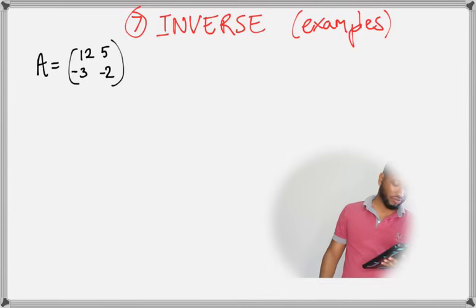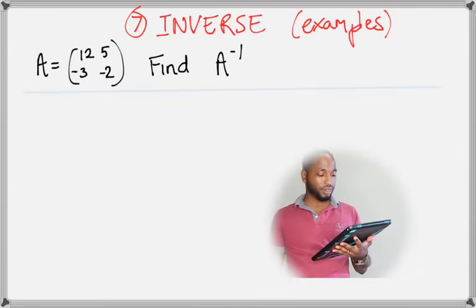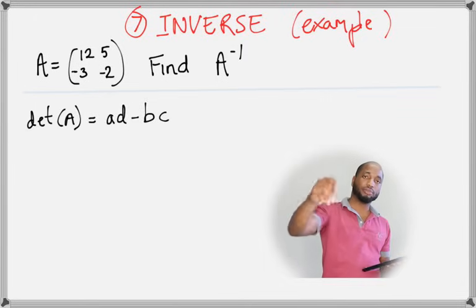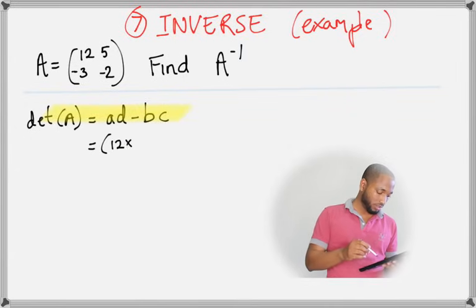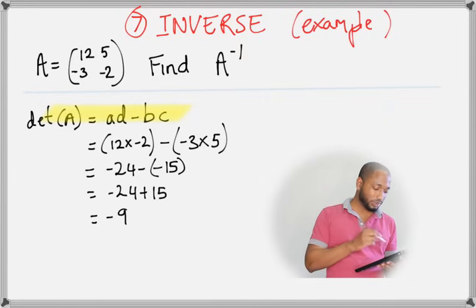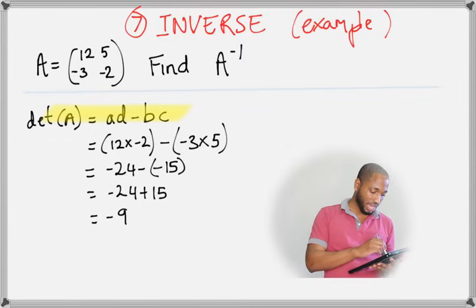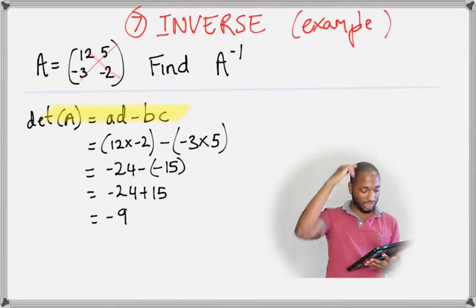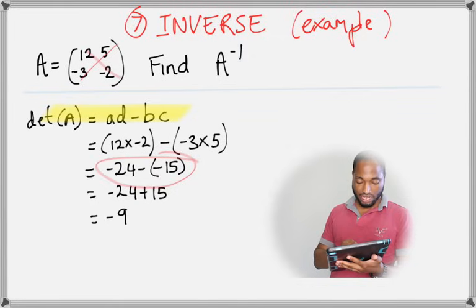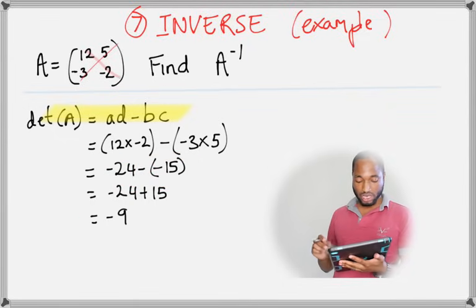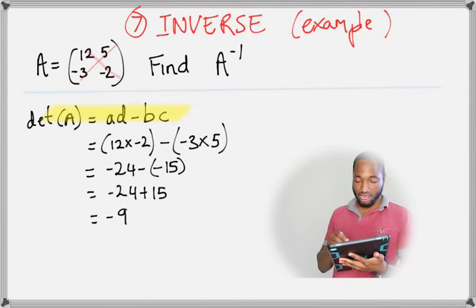Full example — find the inverse of A equals [12, 5; -3, -2]. Remember: determinant, adjoint, then inverse. First find the determinant: 12 times negative 2 minus negative 3 times 5. You get negative 24 plus 15, which equals negative 9.